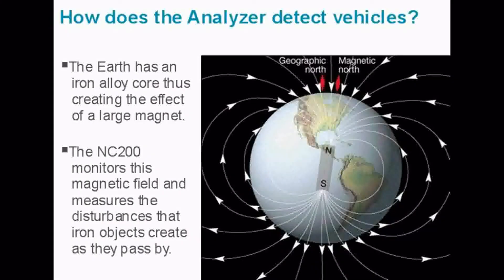Let's begin with a quick explanation on how the NC200 works. The earth has an iron alloy core. It's in this core that a measurable dynamo effect of north and south poles radiate, thus creating the effect of a large magnet. The NC200 monitors this magnetic field and measures the disturbances that iron objects have on the earth's magnetic field as they pass by.